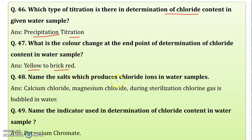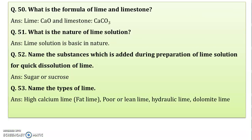Name the salts which produce chloride ions in a water sample. Calcium chloride and magnesium chloride produce chloride ions. During sterilization, chlorine gas is bubbled in water, which also introduces chloride ions. The indicator used to determine chloride content is potassium chromate — a yellow colored indicator.